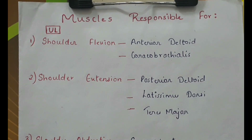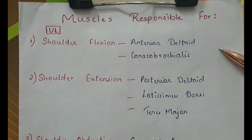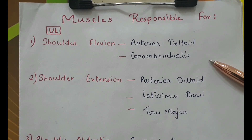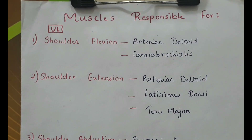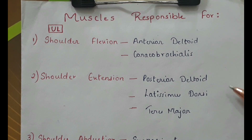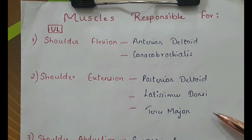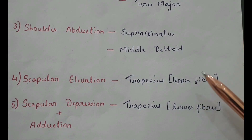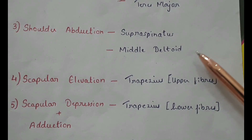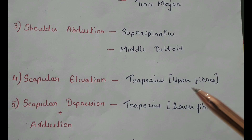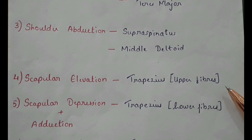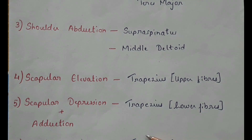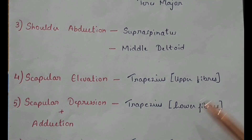Muscles responsible for shoulder flexion: anterior deltoid and the coracobrachialis muscle. Shoulder extension: posterior deltoid, latissimus dorsi, and the teres major. Shoulder abduction: supraspinatus and the middle deltoid. Scapular elevation: trapezius upper fibers. Scapular depression and adduction: trapezius lower fibers.